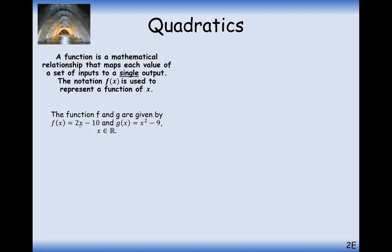The functions f and g are given by f of x equals 2x minus 10 and g of x equals x squared minus 9. Now, just in case something appears like this: x, funny e symbol and then funny r symbol.